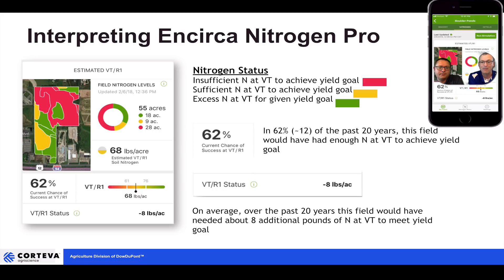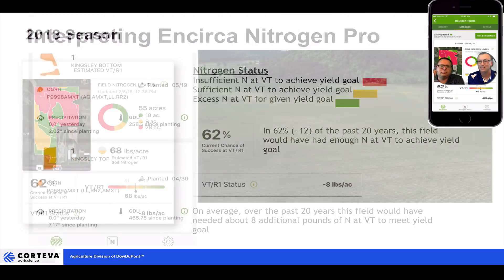Those are just a few things the app is trying to tell us. When we look at that 62%, it's still only telling us that likely on historical weather data we're going to be just eight pounds short. At eight pounds short, you might not make a major change to that. But as the weather changes throughout the season day by day, it's going to give us updates.